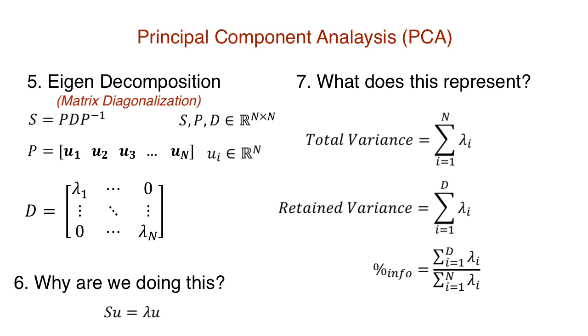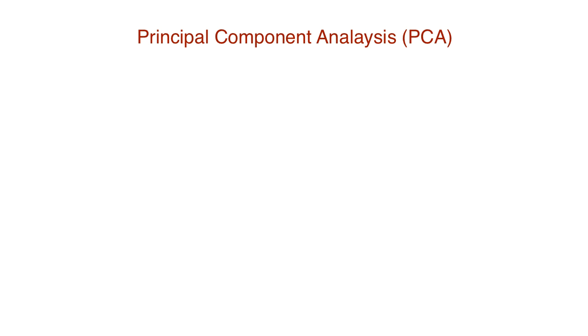By picking a subset of these eigenvector and eigenvalue pairs, we are able to retain most information while only using a fraction of the original dimension. So, here's another question. Which eigenvector and eigenvalue pairs do we select?